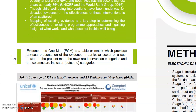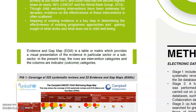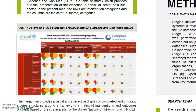Before we proceed further, it becomes crucial to answer a very fundamental question: What is an evidence gap map? An evidence gap map is a table or matrix which provides a visual representation of the evidence in a particular sector or subsector. In this map, we present the intervention categories in rows and the outcome categories in columns. Figure 1 in the poster shows the mega map that has been developed.